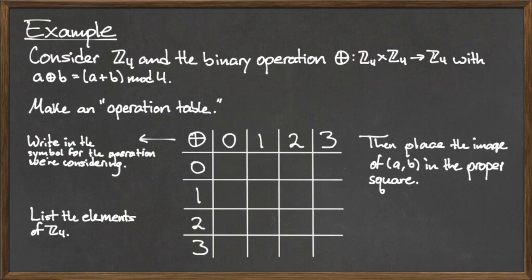To fill in the empty values in this table, we read from row to column and apply the binary operation to each element in turn. By applying the binary operation ⊕ to row 0 column 0, we have 0 + 0 mod 4 is 0, so we fill in this entry with a 0. For row 0 column 1, we apply the binary operation and we have 0 + 1 mod 4, which is 1, so we fill in this entry with a 1.